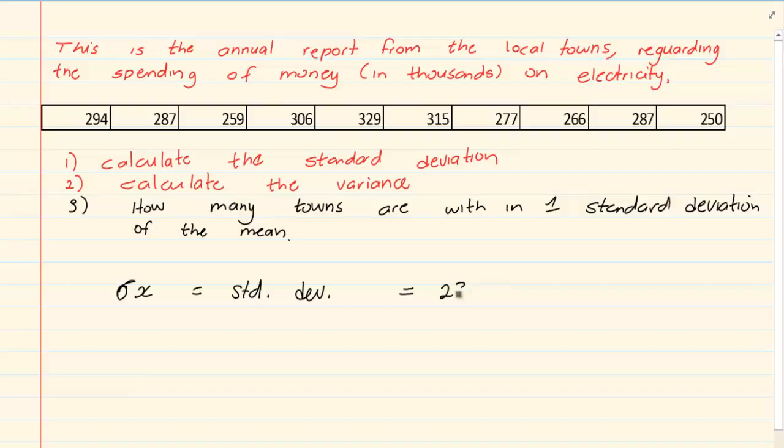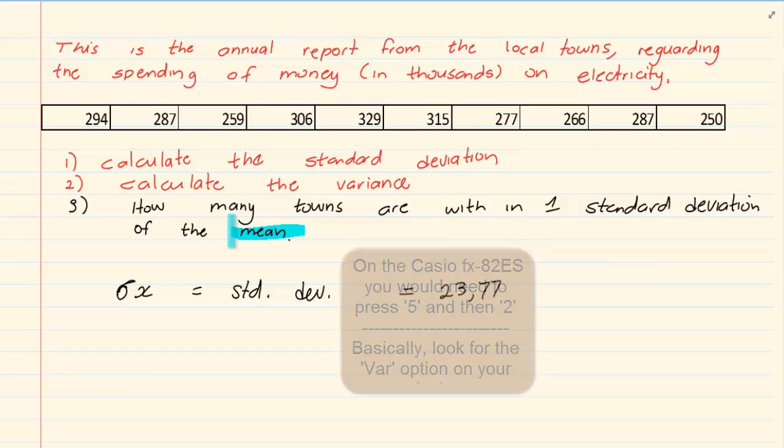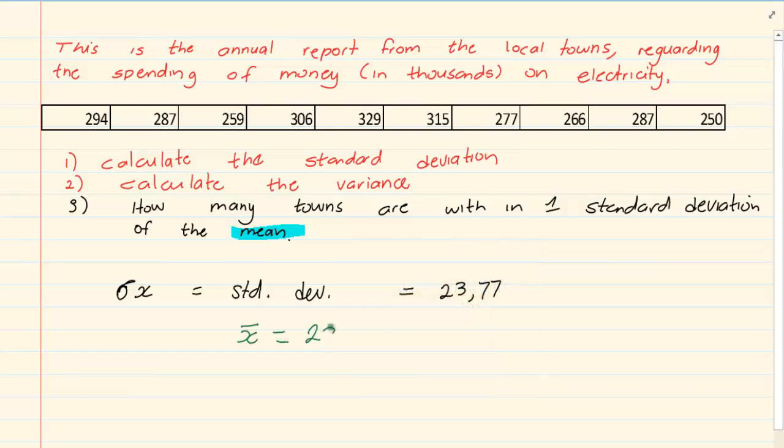Now most of the questions with standard deviation requires the average also, the mean. So immediately go to your AC, press shift 1, go to number 4 and go to number 2 which will give me 287. Then you would notice that they would always ask a question relating it to the mean.